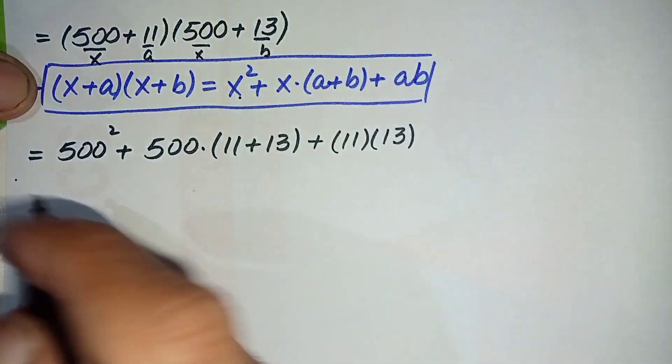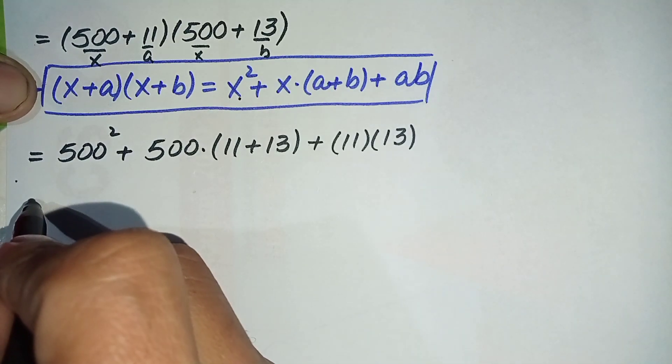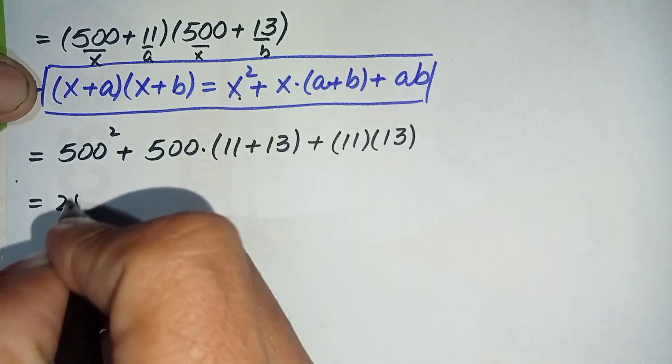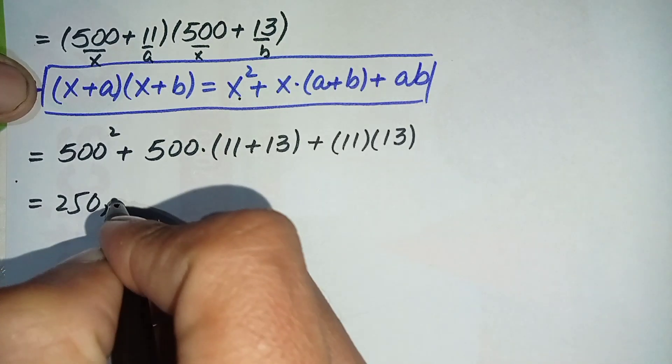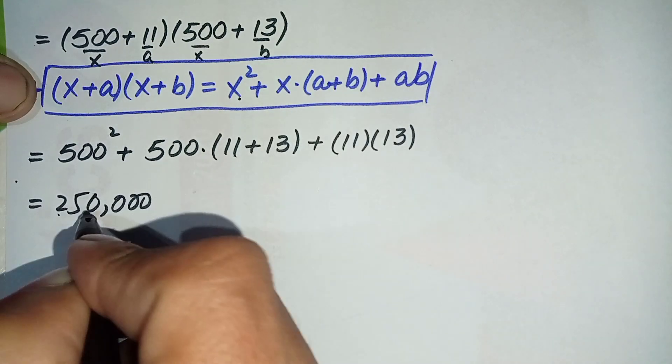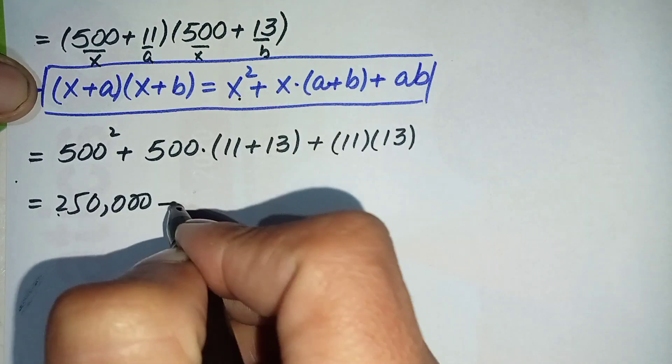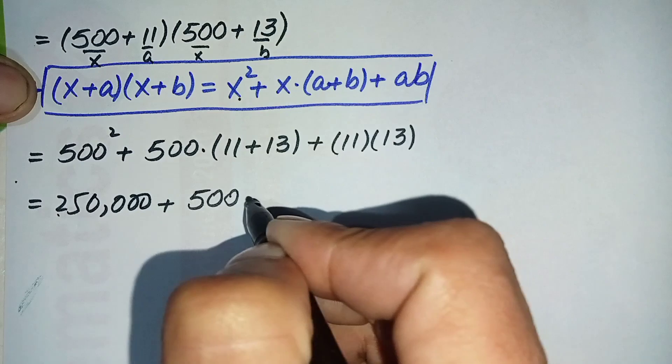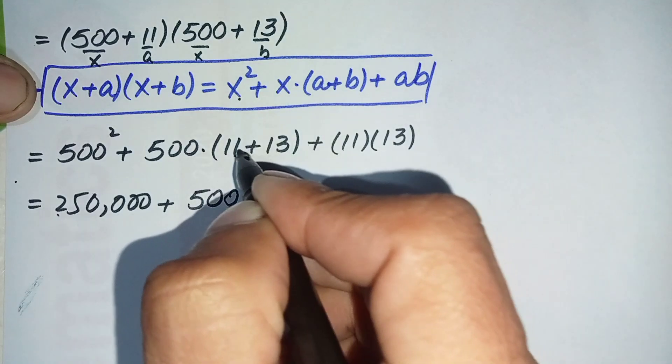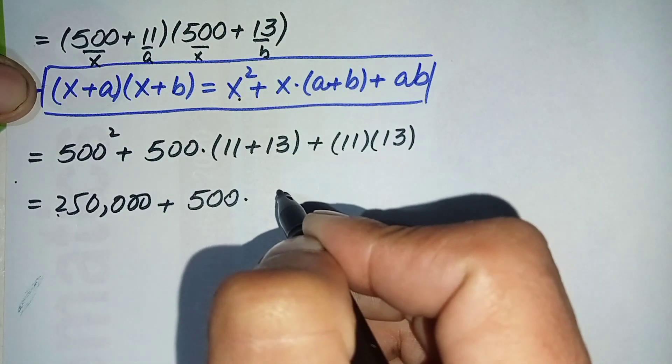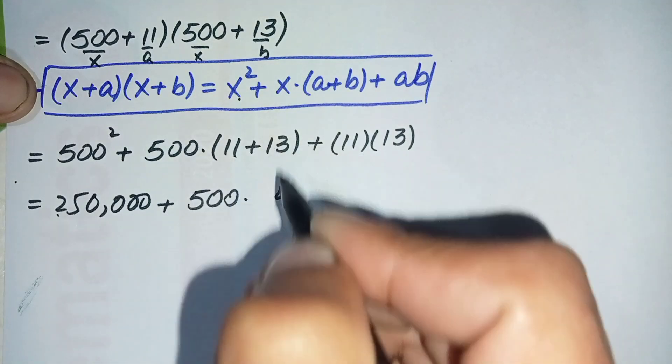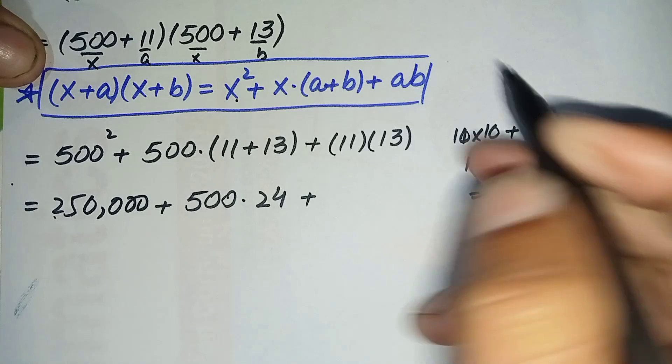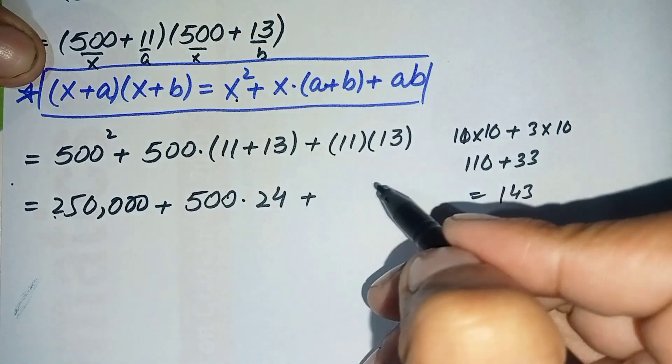Now let's simplify this equation. 500 squared is 250,000, plus 500 times 24 (since 11 plus 13 is 24), plus multiplying 11 with 13 gives 143.